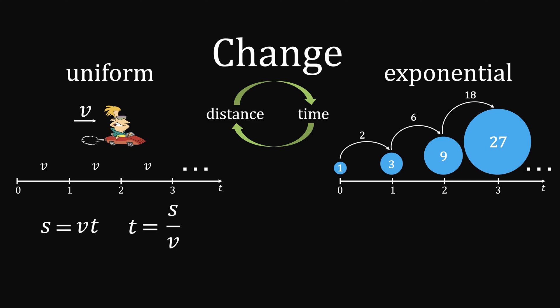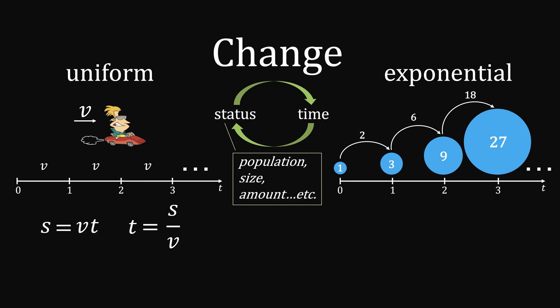This is typical when we are dealing with status such as population, sizes, amounts, and so on. But if you view it not from the absolute sense, but instead in terms of the rate of change, then it's constant. Per unit time, it becomes constant multiples of the prior one. So we end up with an exponential relationship between the status and time.